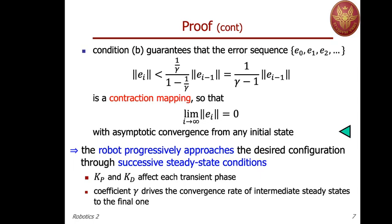Looking at the overall behavior, the robot will move from one steady state to the next, and at every new steady state it will update the feedforward term. There are three gains involved in this simple iterative scheme: Kp, Kd, and γ. The Kp and Kd affect the transient during each iteration — when moving from one steady state to the next, the time needed, overshooting, and damping depend on the choice of Kp and Kd. The γ instead affects the convergence rate from one steady state to the desired final one.